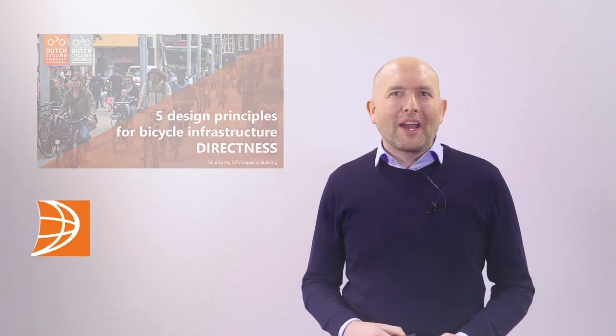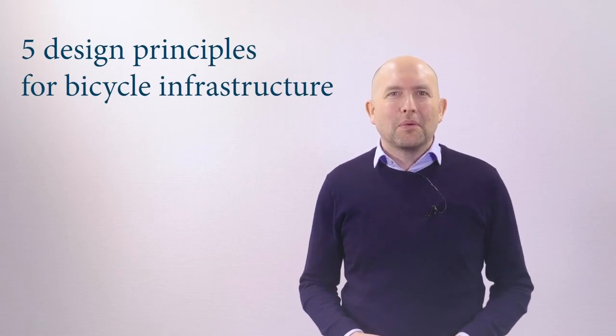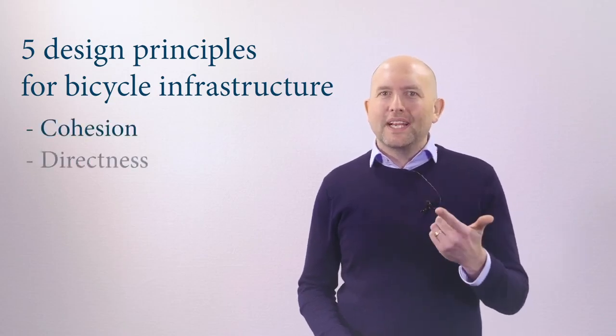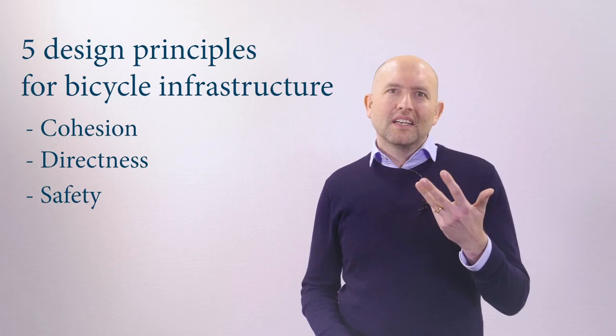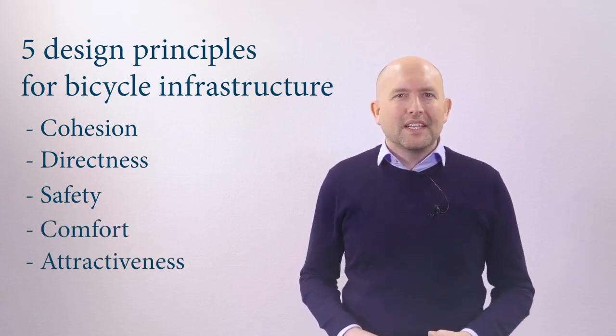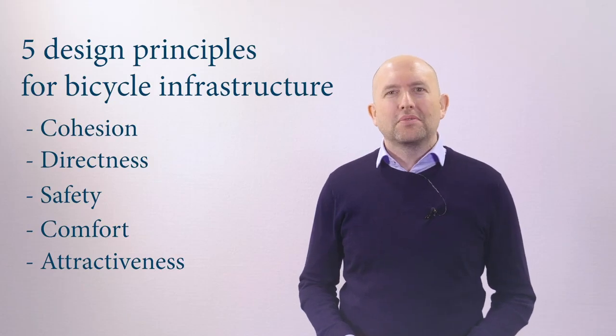The famous Dutch Crow Bike Design Manual talks about five design principles for bicycle infrastructure: cohesion, directness, safety, comfort and attractiveness. In the next minutes I will introduce the directness principle.